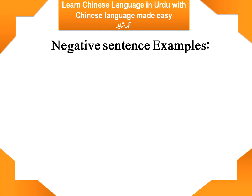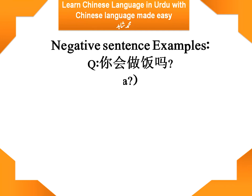Here we go with the next sentence. It's a question: 你会做饭吗? 你 means 'you,' 会 means 'can,' 做 means 'to do something,' 饭 means 'meal.' When 做 is combined with 饭, it makes 做饭, meaning 'cooking a meal.' So: 你会做饭吗? Can you cook the meal?